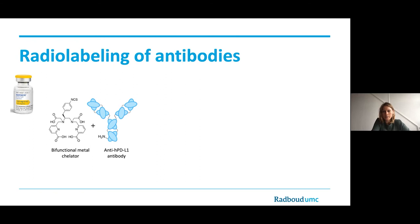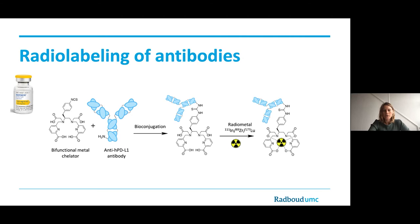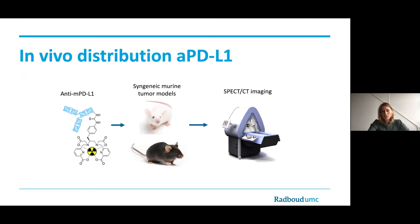The metal chelator can be conjugated to the free amine groups of the antibody — this is the bioconjugation step. Then we add the radionuclide, such as indium-111 for SPECT imaging, and we have a radiolabeled drug. We can then evaluate the distribution of this drug in mouse tumor models. In immuno-oncology, we often use syngeneic murine tumor models, meaning mice with a fully intact immune system, so we can also study the drug's distribution towards lymphoid tissues. The mice are inoculated with a murine tumor cell line and we evaluate drug distribution with micro-SPECT CT imaging, such as the U-SPECT system available in our facility.